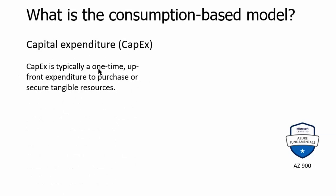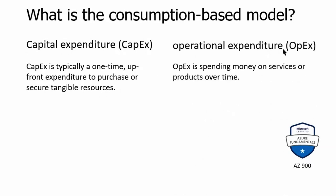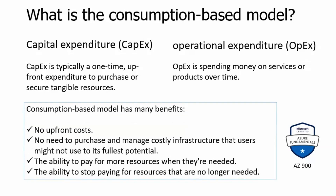To understand the consumption-based model, we first need to understand capital expenditure, or CapEx. CapEx is typically a one-time upfront expenditure to purchase or secure tangible resources. In the case of setting up a data center or private cloud, it is more expensive, resulting in more capital expenditure. Next is operational expenditure, or OpEx — spending money on services or products over time. Monthly expenditure to manage the cloud is called operational expenditure.